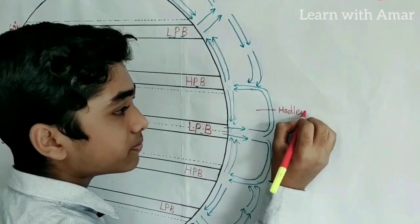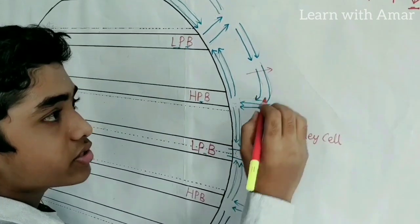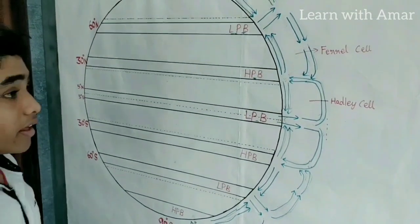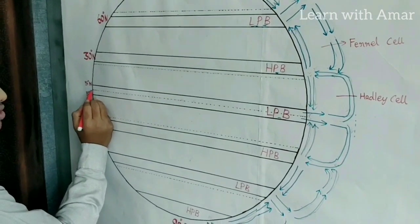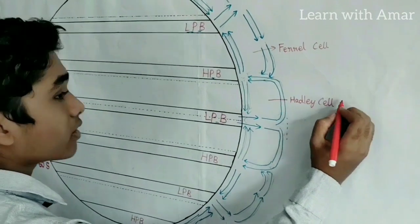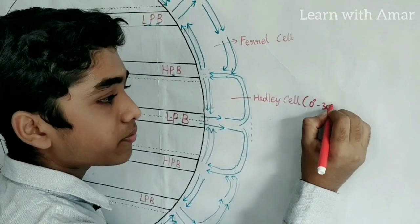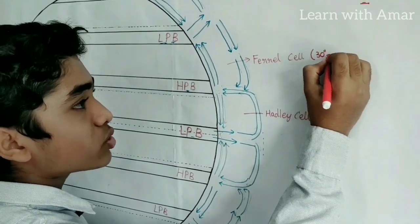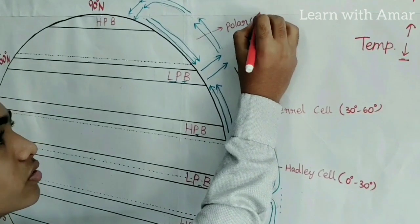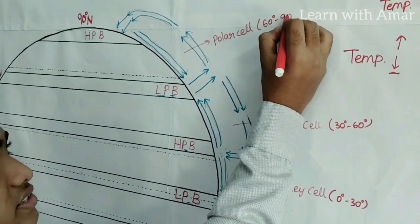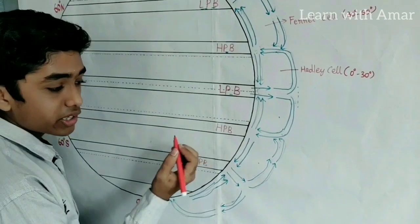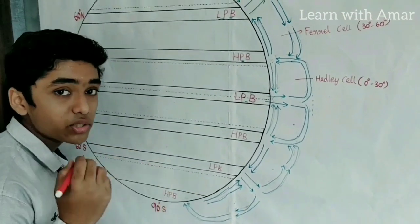The first one is known as the Hadley cell. Then this is known as the Ferrel cell. The Hadley cell ranges from 0 degrees (equator) to 30 degrees north and south. The Ferrel cell is from 30 degrees to 60 degrees. The Polar cell is from 60 degrees to 90 degrees. Similarly, in the southern hemisphere: Hadley cell from 0 to 30 degrees south, Ferrel cell from 30 to 60 degrees south, and Polar cell from 60 to 90 degrees south.